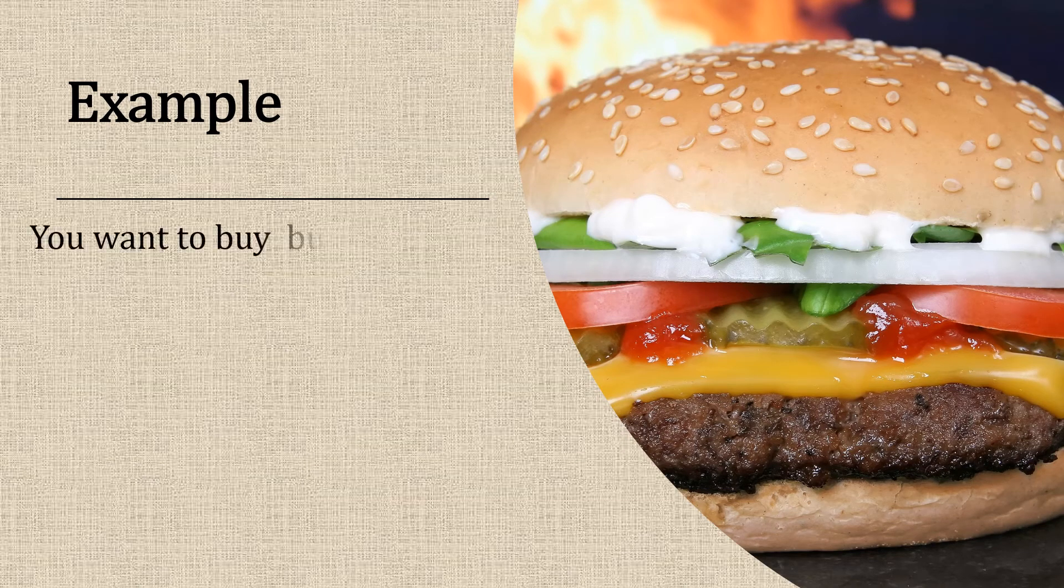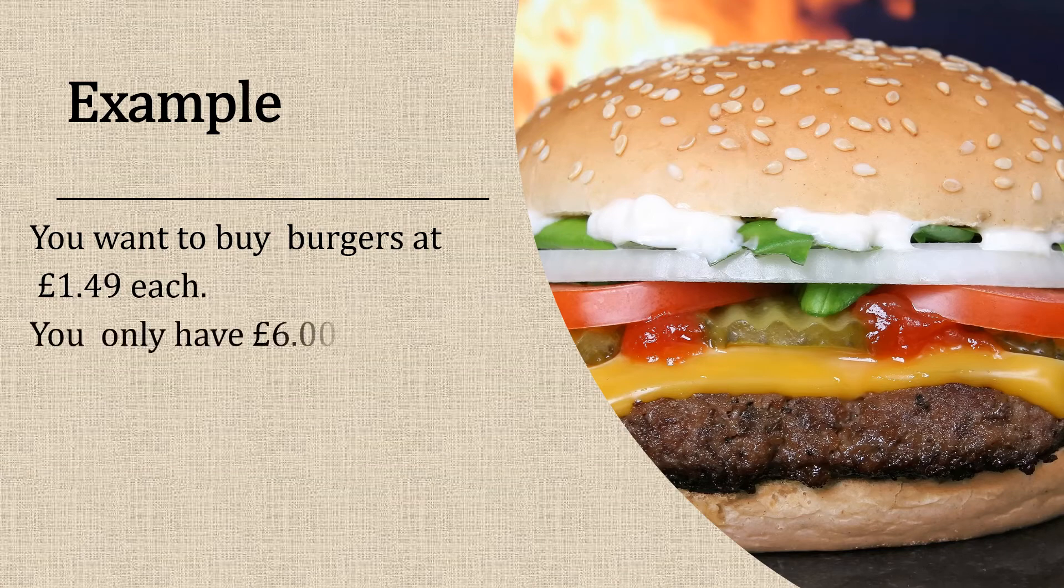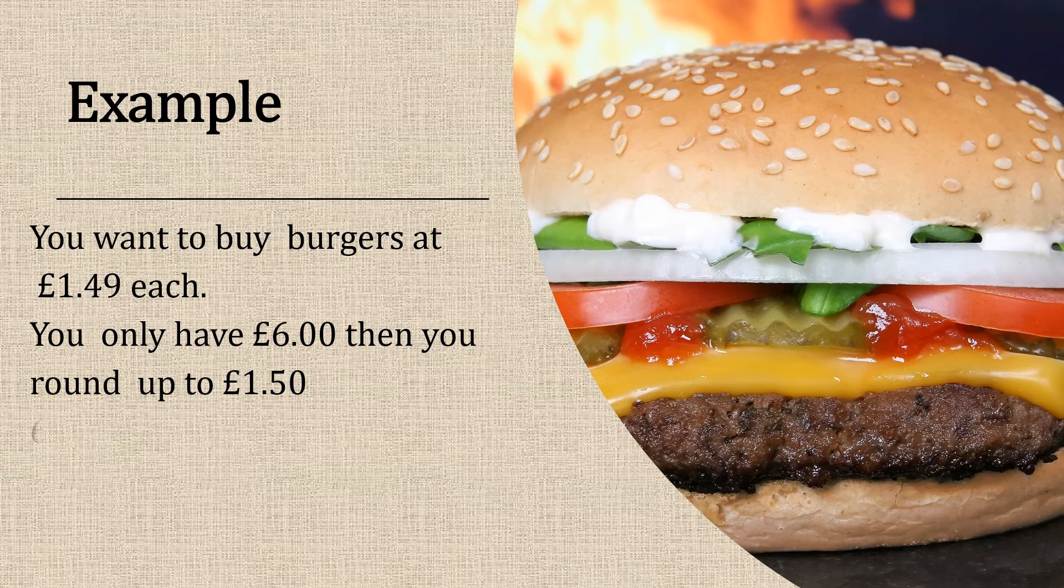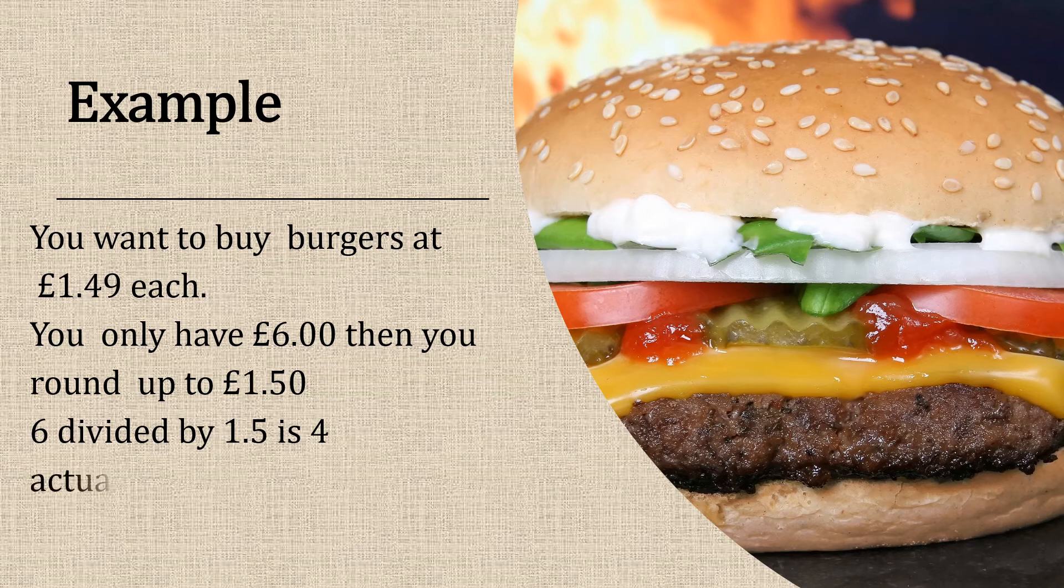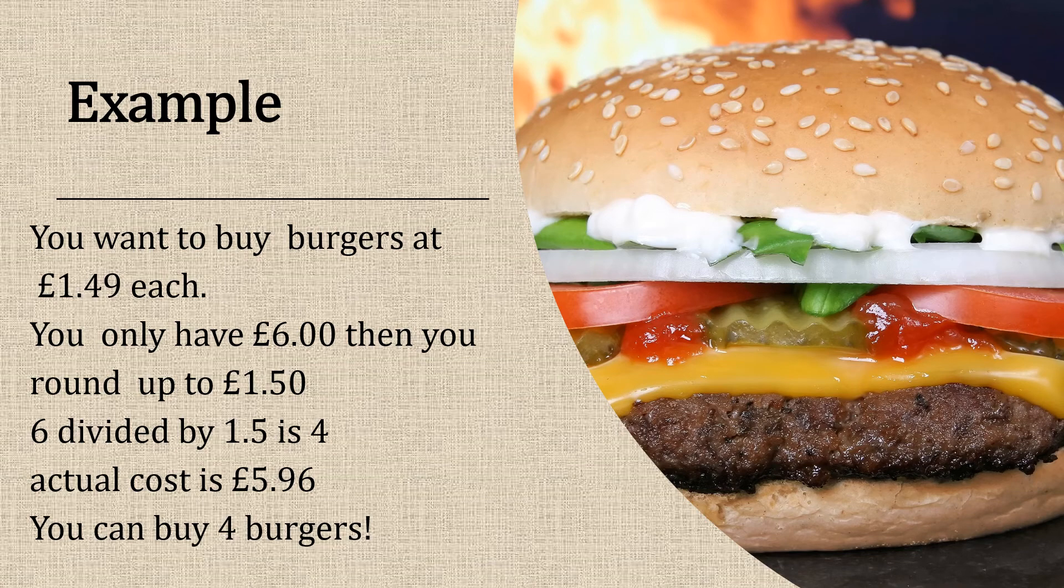Example: you might want to buy some burgers at one pound 49 each. You only have six pounds, so you might want to round that up to one pound 50. Now six divided by one and a half is four, so your actual cost would be five pounds 96. This tells you that you can actually buy four burgers.